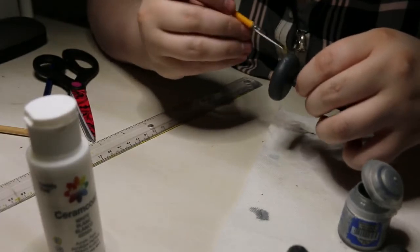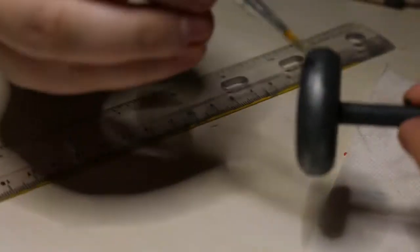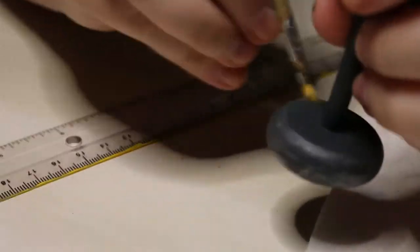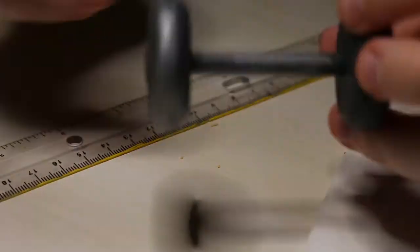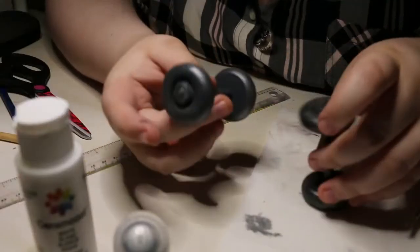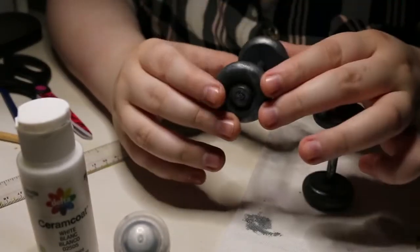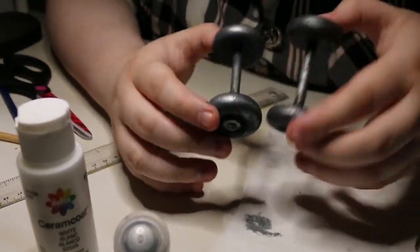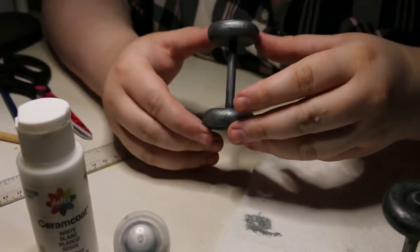Once the paint has dried, you are done. That is how to make a little easy and cheap dumbbell for your dolls.